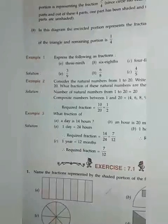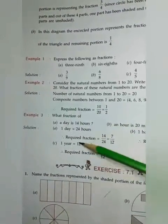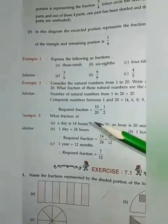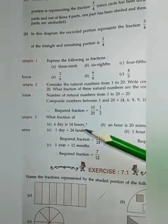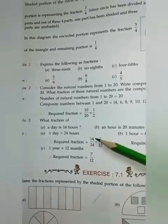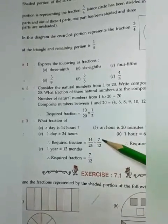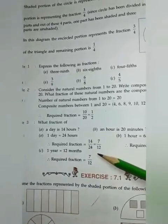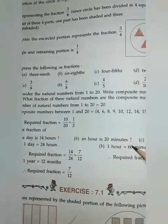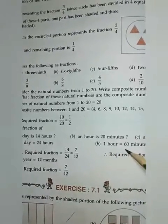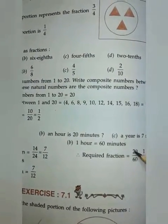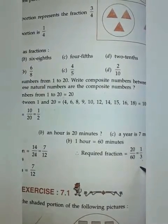Example 3: What fraction of a day is 14 hours? 1 day equals 24 hours, so the fraction is 14/24. We reduce this fraction by dividing by 2 — 7/14 and 12/24 — giving us 7/12 as the answer. Next part: What fraction of an hour is 20 minutes? 1 hour equals 60 minutes, so 20/60. We reduce this fraction to get 1/3 as the answer — dividing both by 2: 10/20 and 10/30, giving 1/3.